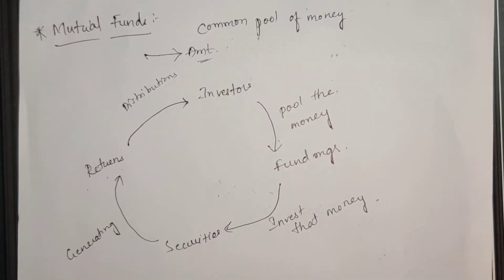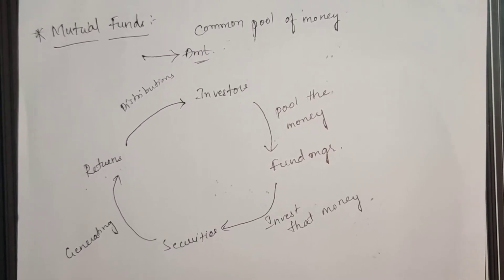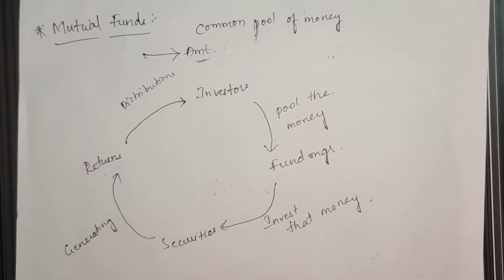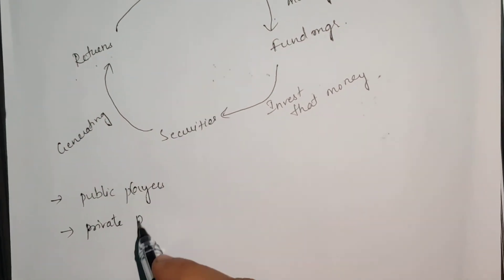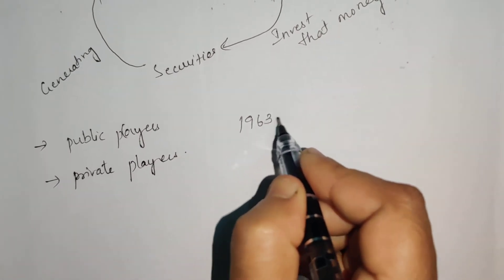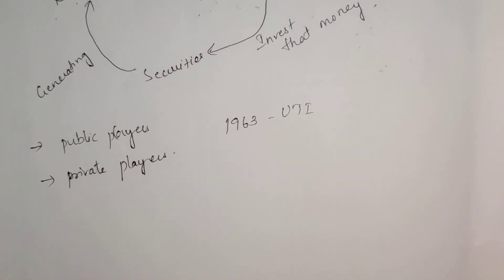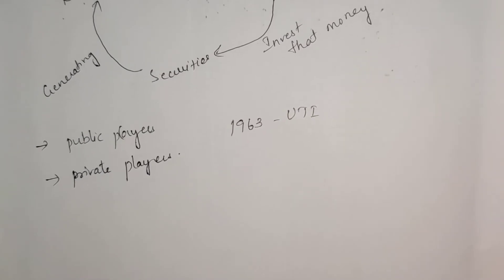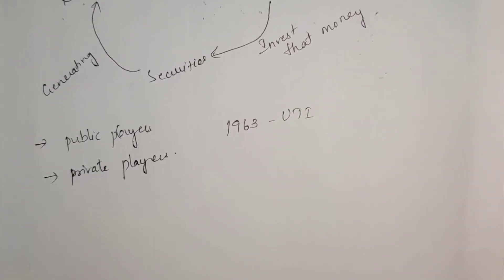The history of mutual funds is discussed in terms of emergence through public and private players. In 1963, UTI—Unit Trust of India—was set up by Parliament under the UTI Act and given a monopoly. This was followed in 1987 by SBI Mutual Fund, Canbank Mutual Fund,